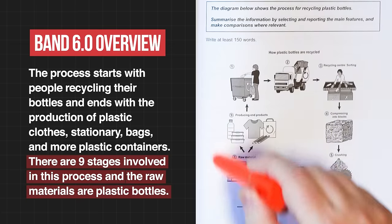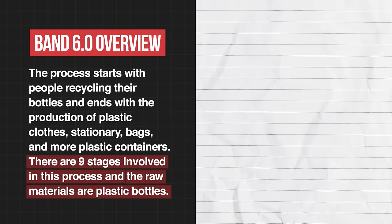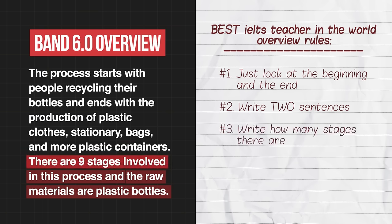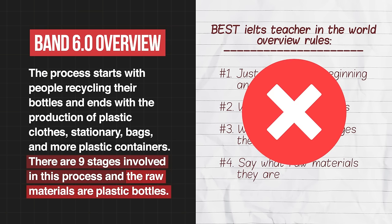Remember, the overview is just a summary of the most important information. In order to write a clear overview, you need to fully understand the diagram. When I spoke to this student, what they were told by their former teacher was: just look at the beginning and the end, write two sentences, write how many stages there are, and say what the raw materials are. The key problem is they were told to follow a rigid set of rules rather than just look at the diagram, understand it, and then convey clearly what the most important parts were. Giving students a list of rules stops them from doing the most important thing — thinking for themselves.